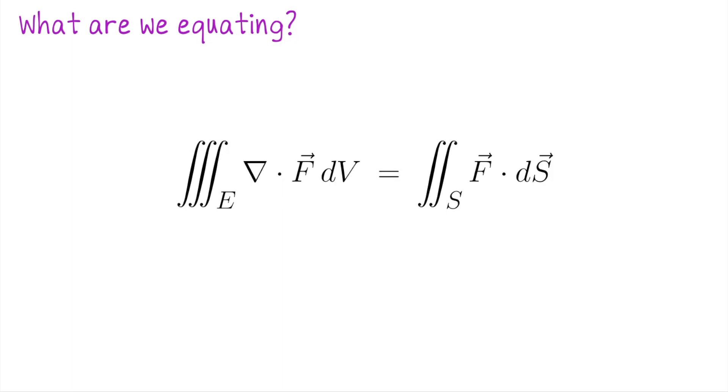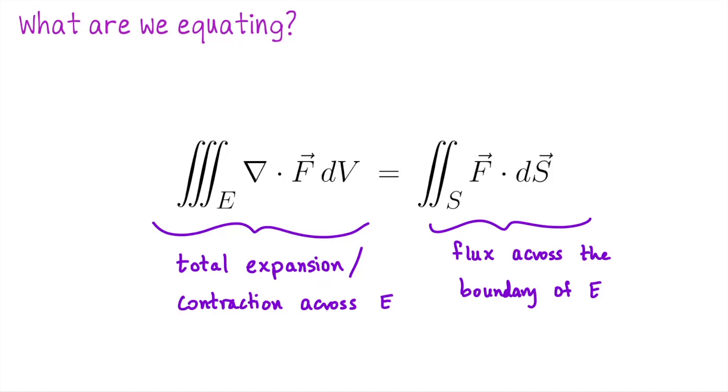As usual, what we're equating has a physical interpretation. On the left, that's the divergence of F across E. In other words, we're measuring the total expansion or contraction across the solid domain E. On the right, this is a flux integral. So if S is like a permeable membrane enclosing E, we're measuring if F is fluxing out or in across that boundary. These two sides make sense together. If you want to add up whether your gas is expanding across the entire region, you can just check how it's behaving on the boundary.